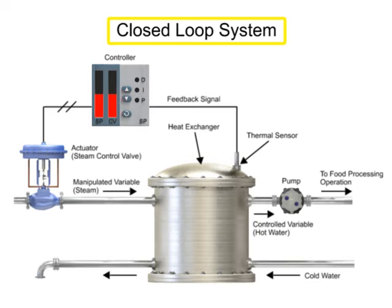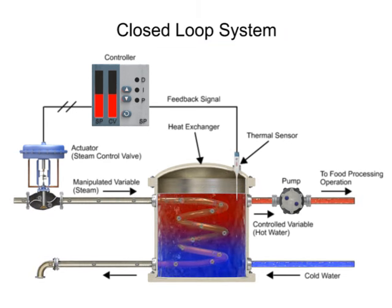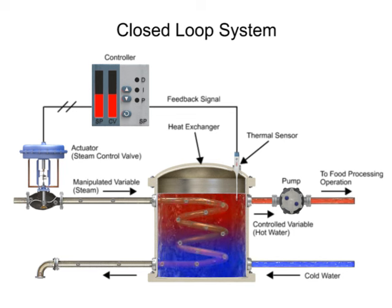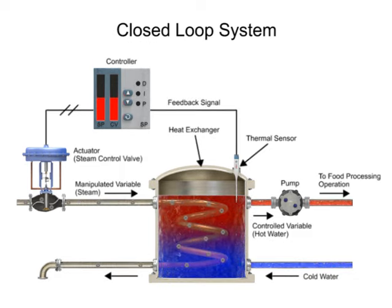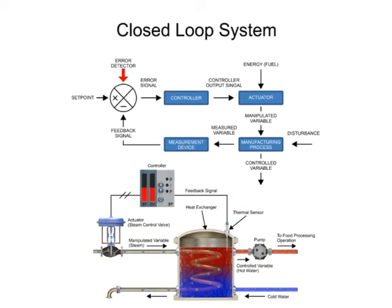The function of a closed-loop system is to monitor and automatically maintain a variable at a desired set point in a manufacturing process. Using an example of a heat exchanger, the operation of a closed-loop system is compared with a block diagram.